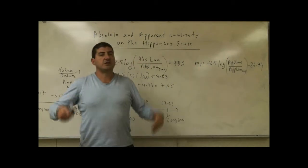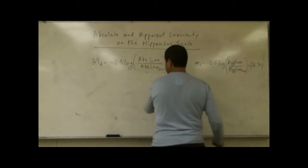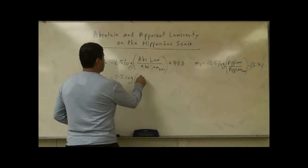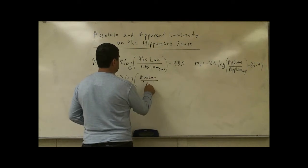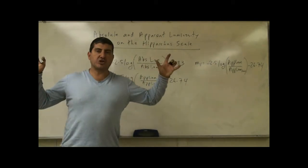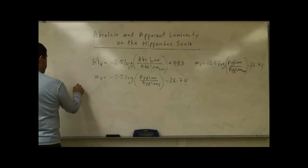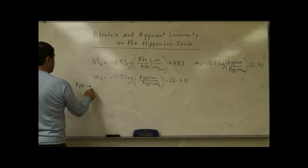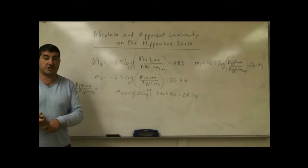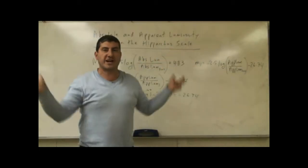How does the apparent luminosity work? Pretty much the same way. The apparent visual magnitude uses the same first part: negative 2.5 times log of apparent luminosity over apparent luminosity of the sun, minus 26.74. Since the sun is by far the brightest-looking object in the sky, it gets the most negative value on the scale — the most to the left.